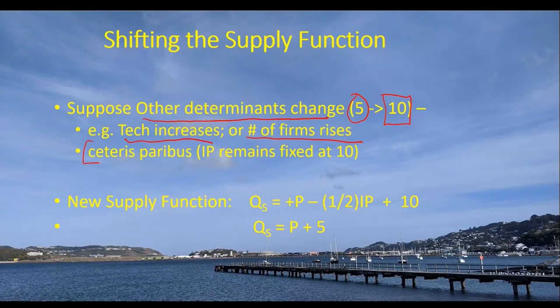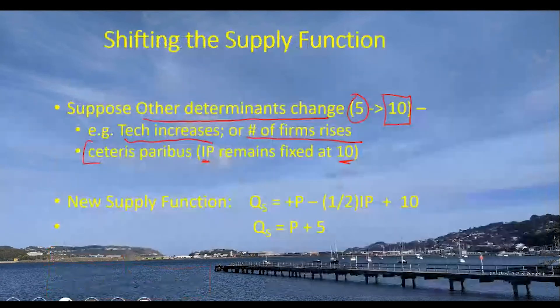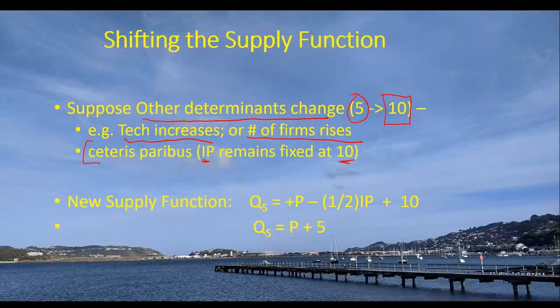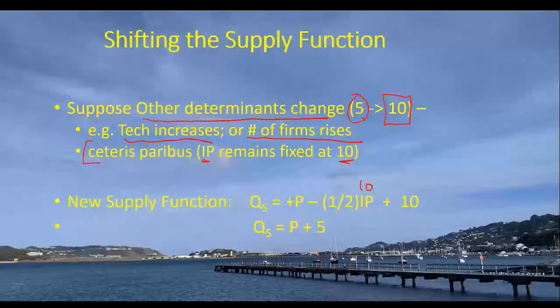Now, we're going to maintain ceteris paribus. Ceteris paribus means that the input prices, for example, are going to remain fixed at 10 like they were on the previous exercise right here. So that's going to remain fixed. So all we're going to do is we're going to keep that 10 fixed over here. And we're going to add the 10 instead of the 5. So no longer a 5. And we're going to move the 10 down here. And we're going to change the equation just a little bit.